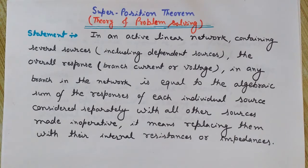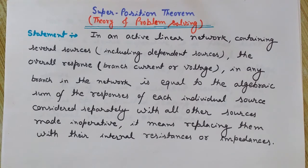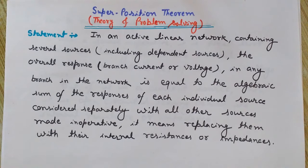Let's start with the statement, but before the formal definition I'd like to tell you what superposition theorem means in simple words. If I have a network that contains several sources — current sources or voltage sources — and I want to calculate either current or voltage in any branch of that circuit, I can do so by taking only one individual source at a time, making the other sources inoperative, and then adding the responses algebraically to find the combined effect.